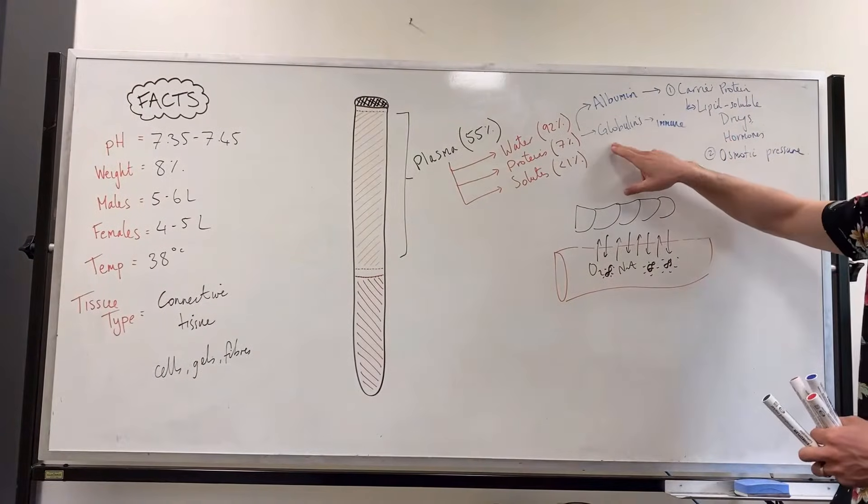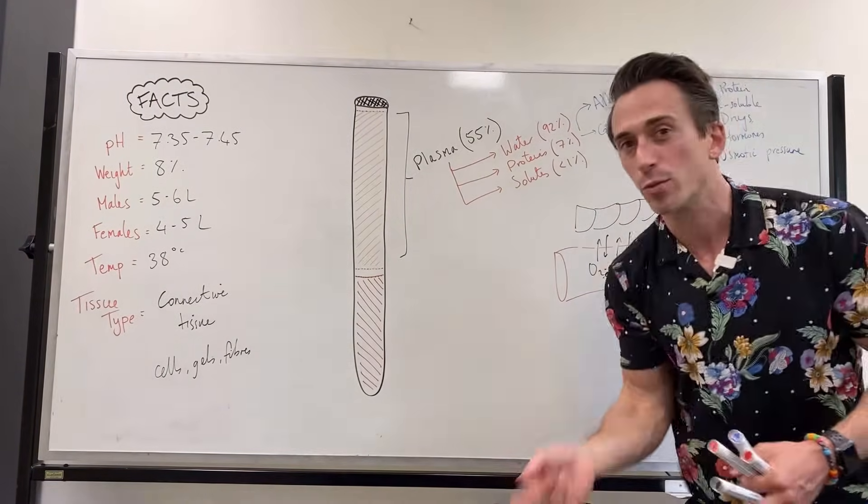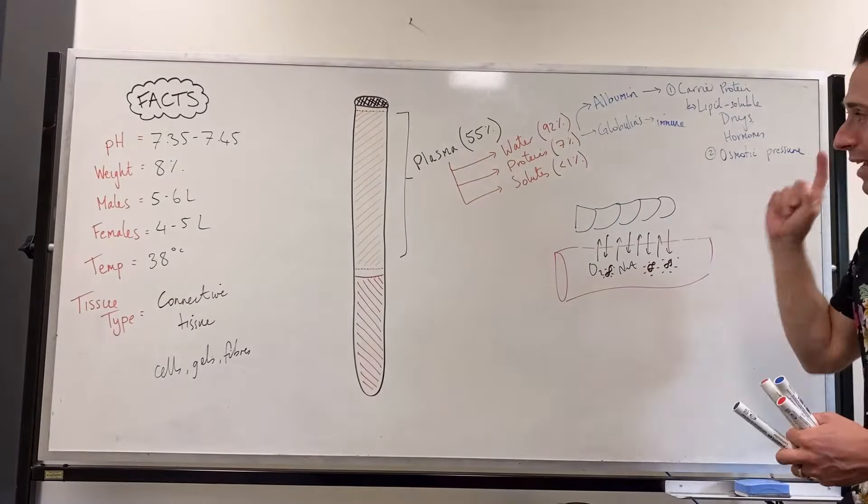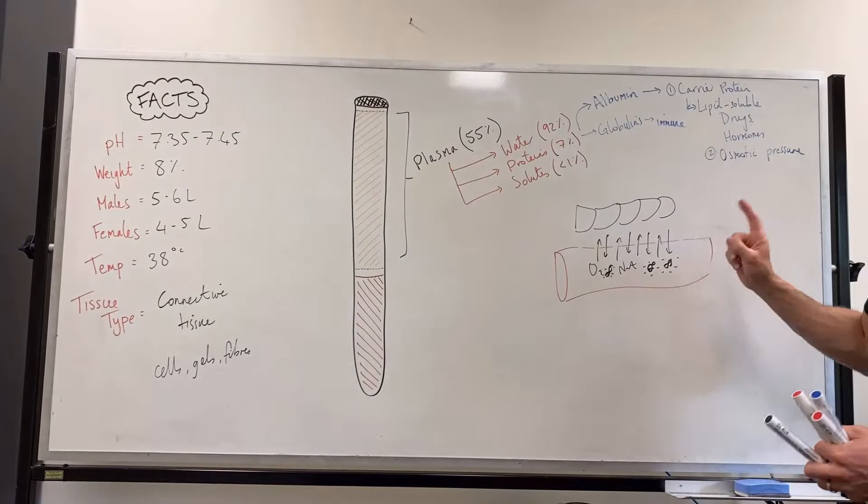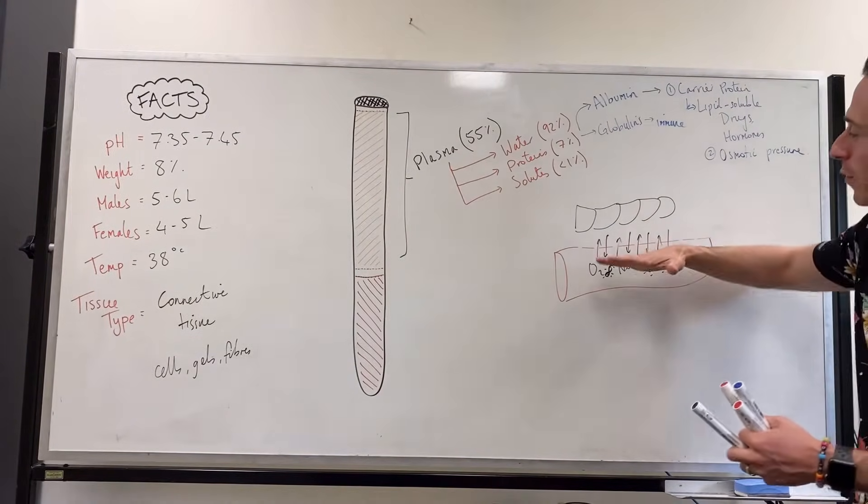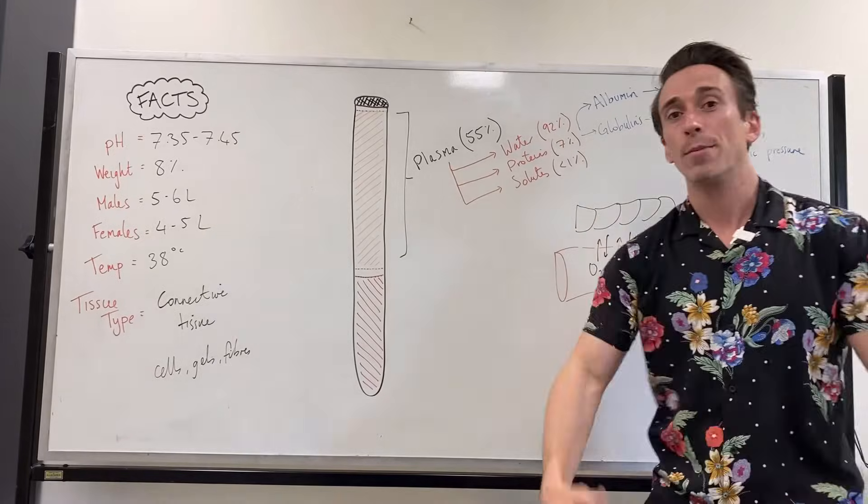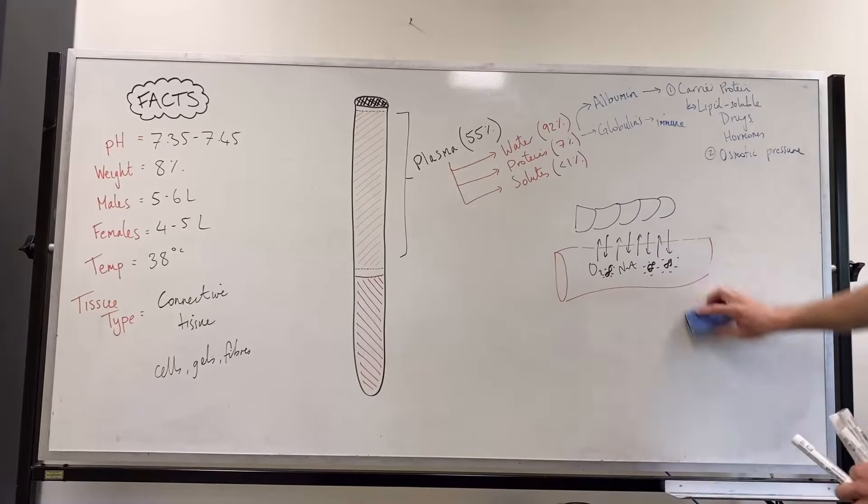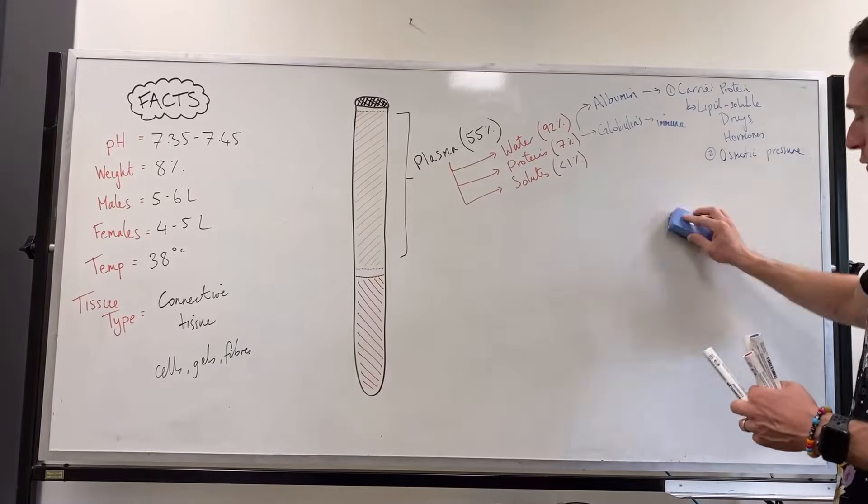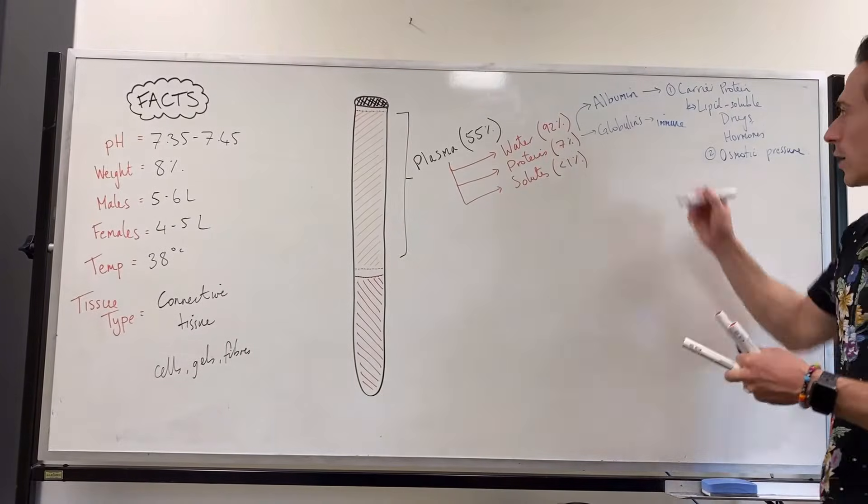Albumin, just like globulins, and just like fibrinogen, which is going to be the third protein, are all made in the liver. So if the liver isn't doing too well, you may not produce enough albumin, you may not maintain osmotic pressure, and fluid may remain leaked out, and this is edema. So really important clinical link there. So we said globulins are important with immune function, but they're also important in clotting.